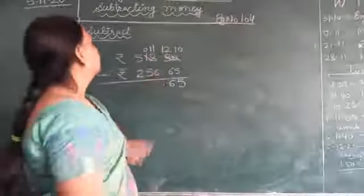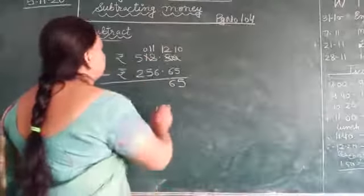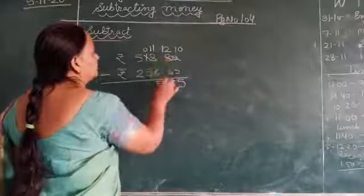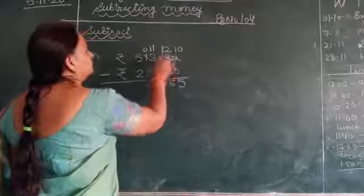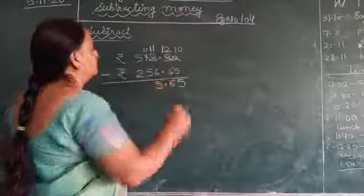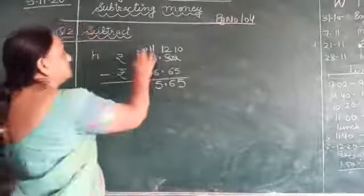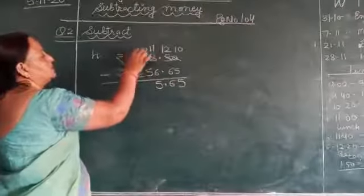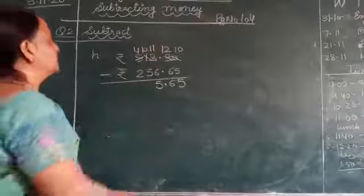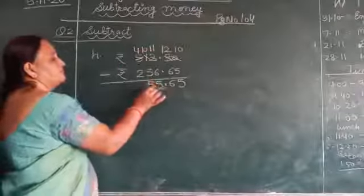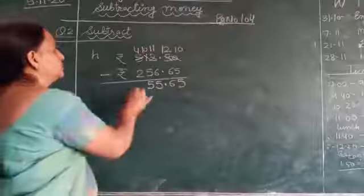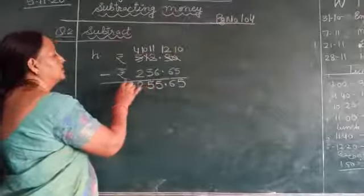We have to put the point here. Now here is 0, here is 10 and here is 4. 10 minus 5 is 5. 4 minus 5, so we make it 14. 14 minus 5 is 9. 5 minus 2 is 3, and then 2.